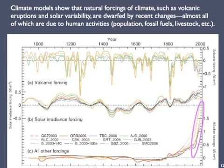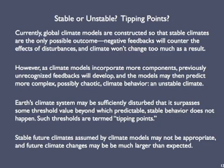No serious climate scientist doubts that human activities are major influences on modern climate. Currently, global climate models are constructed so that stable climates are the only possible outcome of their experimental runs — where stable refers to the meaning discussed in episode 4. If some factor changes, negative feedbacks will counter the effects of some disturbance and limit the climate change. However, as climate models incorporate more components and get more complex, previously unaccounted-for feedbacks will develop, and the models may begin to predict complex, possibly chaotic, climate behavior.